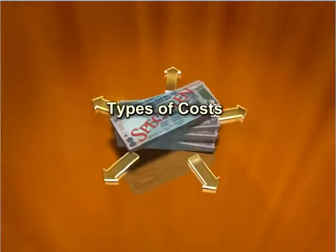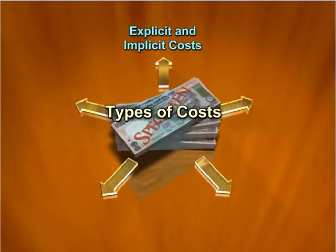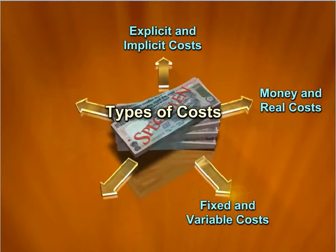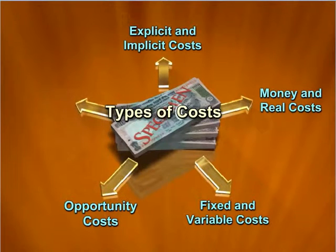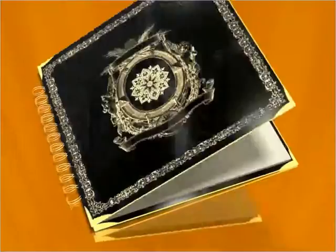The different types of costs are: Explicit and Implicit Costs, Money and Real Costs, Fixed and Variable Costs, Opportunity Costs, and Social and Private Costs.